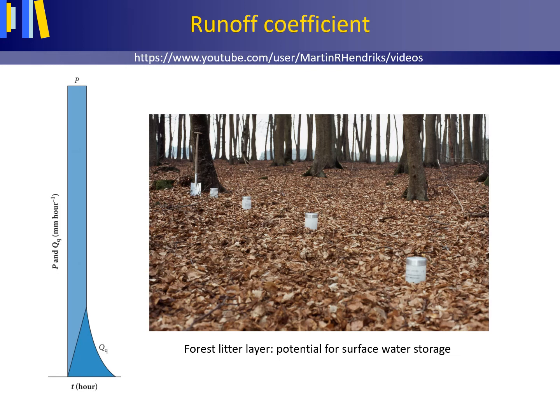The runoff coefficient on an annual basis is defined as the total discharge volume in millimeter or cubic meter as a percentage of the precipitation volume in millimeter or cubic meter on an annual basis. Whereas the runoff coefficient on a storm basis is defined as only the quick flow volume in millimeter or cubic meter as a percentage of the precipitation volume in millimeter or cubic meter on a storm basis.